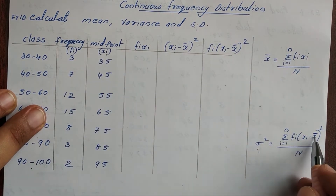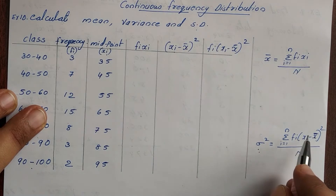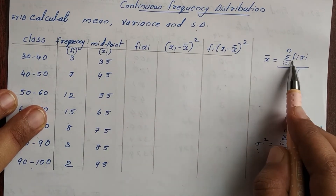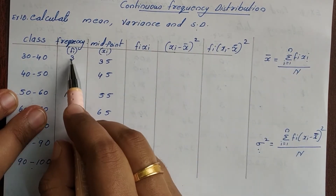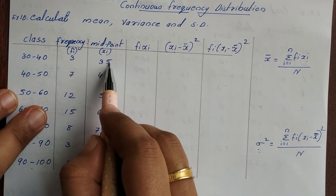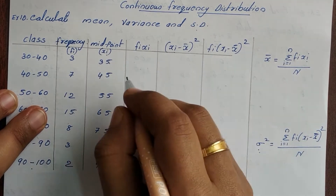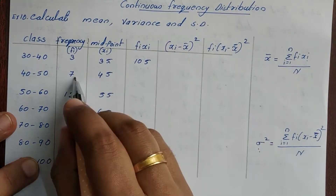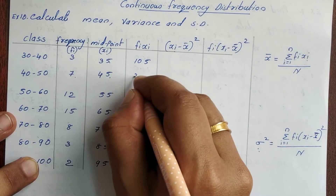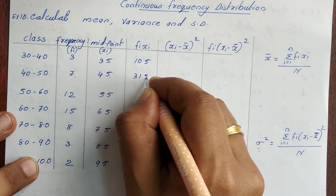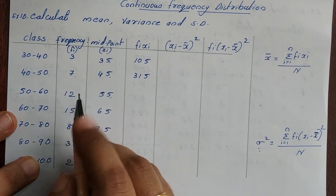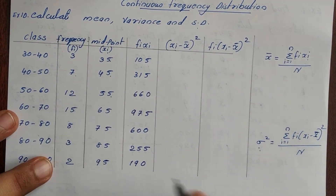Now let's calculate x-bar. That is 3 × 35, which is 105. Then 7 × 45, which is 315. Now let's multiply and look at x-bar. It is 190.